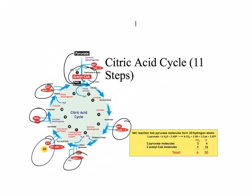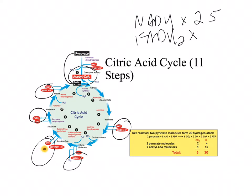For every molecule of NADH that you oxidize, you get 2.5 ATP, and for every molecule of FADH2 you get 1.5 ATP. We're going to multiply those out to diagram how much ATP we get from one molecule of glucose after it's completely oxidized to water and CO2.